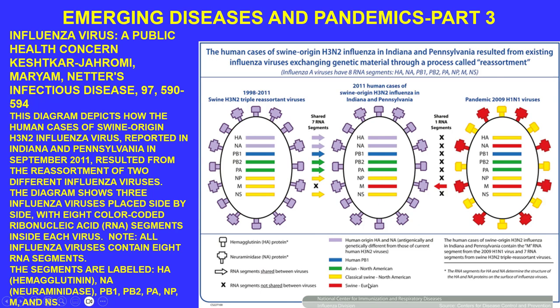In the diagram, red is swine, yellow is classic swine, green is avian, blue is human, and light purple is human origin. As time has gone on, different mixings occur and these mixings create strains that, due to reassortment, the human immune system has not been able to deal with — resulting in a much nastier influenza virus than previously seen.